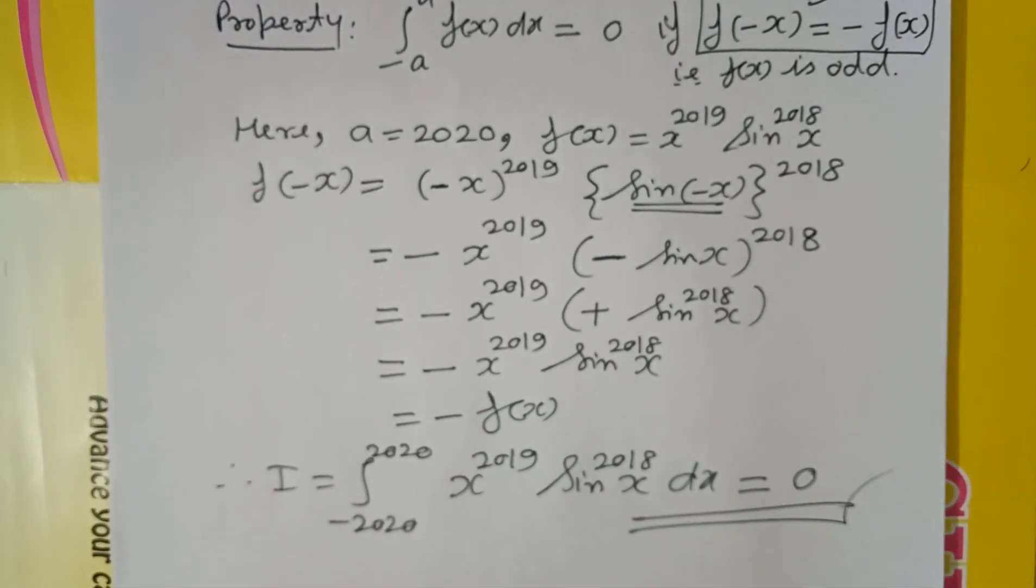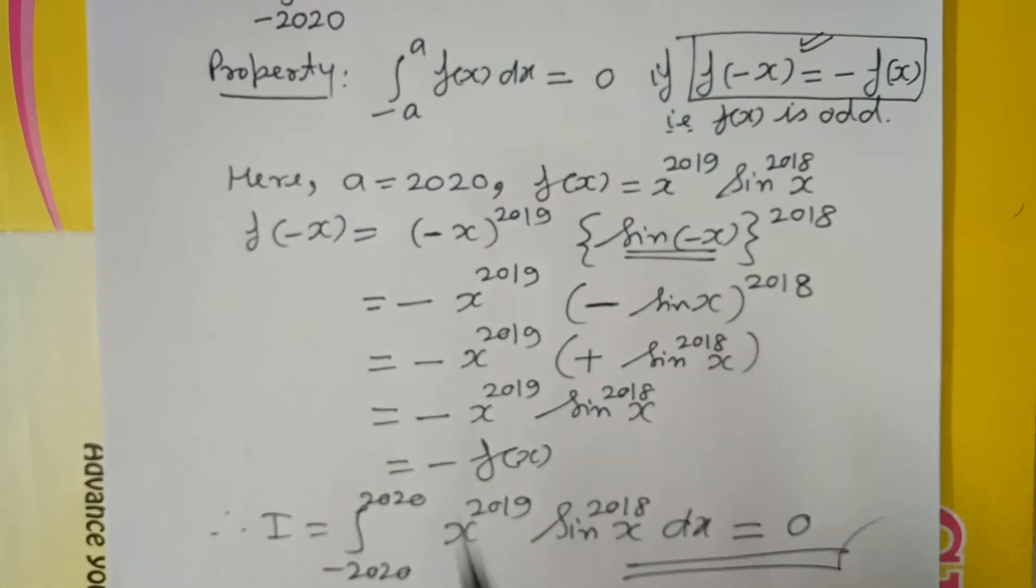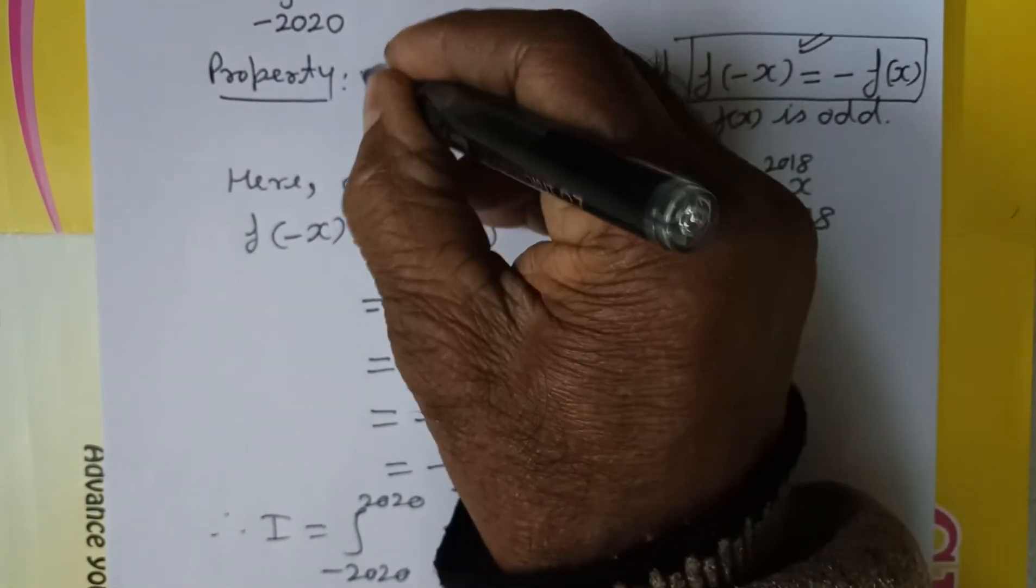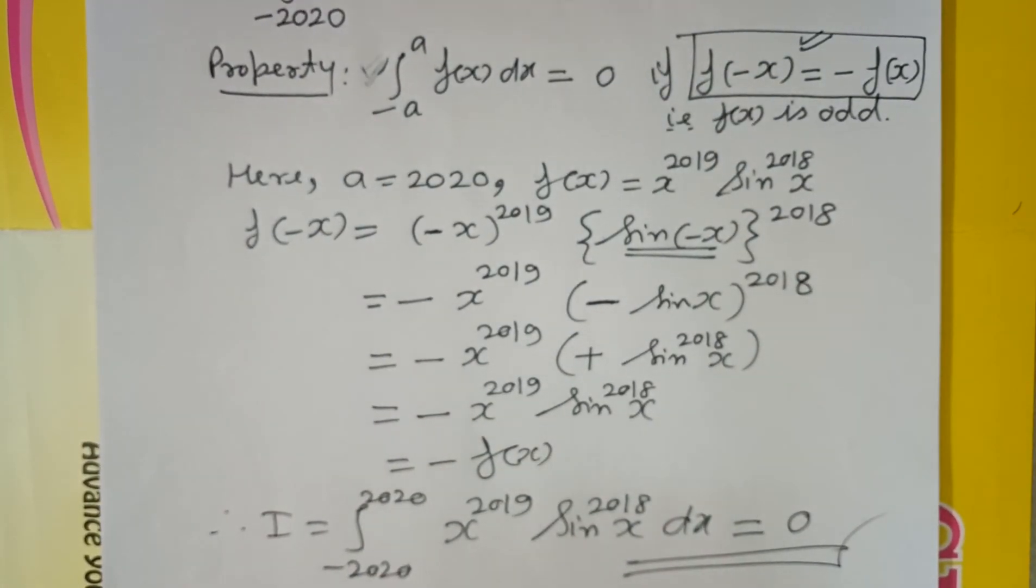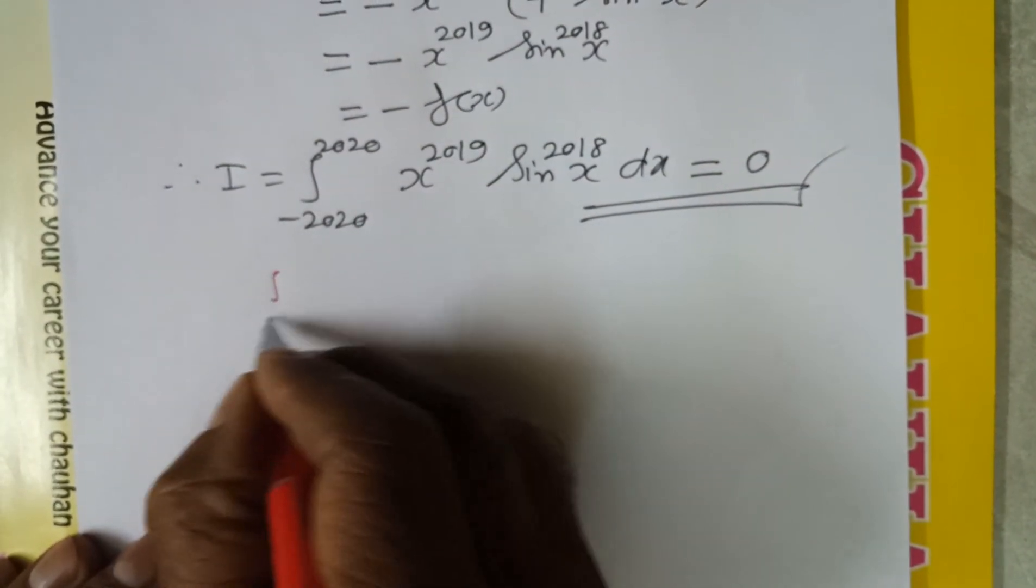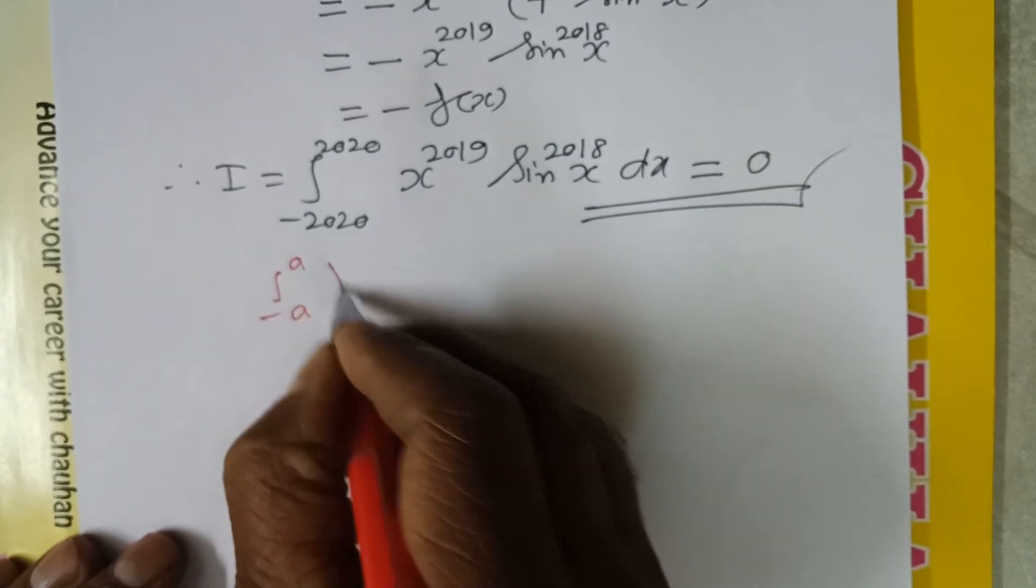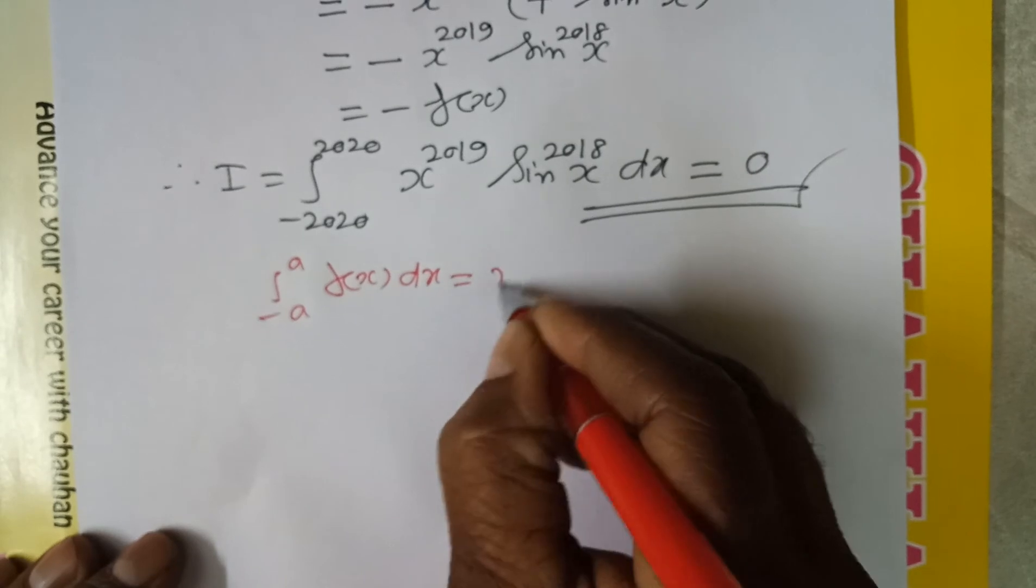This property 4 that we mentioned here for you, this is the half part of that property. Let me write the full property for you below. The full property is: integral from minus a to a of f(x) dx, known as property 4.